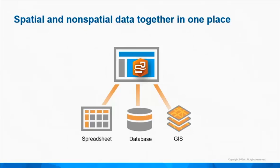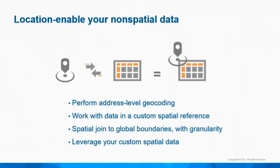Insights treats both the spatial and non-spatial as first-class citizens, so that you can directly connect to that data in its current location. When you bring in non-spatial data, you can quickly and accurately spatially enable it. Insights comes with location content — global boundaries going down to some of the most granular boundary types. You can perform address-level geocoding, and even if you have custom spatial reference data, Insights handles that. You can also perform spatial joins with points, lines, and polygons to location-enable your data.